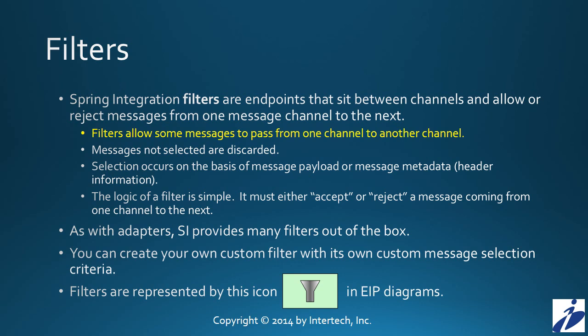Metadata being the header information of a message. So the logic of a filter is pretty simple: it either accepts or rejects based on what it sees in the message — accepting it, allowing it to go on to the next channel, or rejecting it and discarding it from the message system. You can also create your own custom filter using something called a message selector. Filters are represented in EIP diagrams with the icon shown at the bottom of this slide.